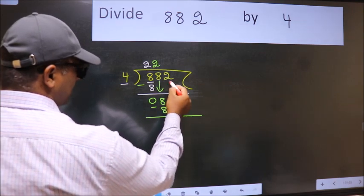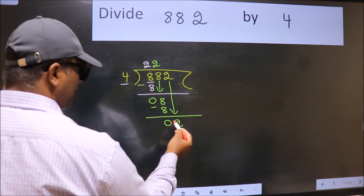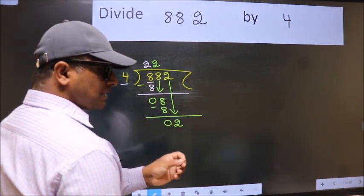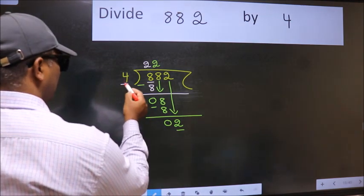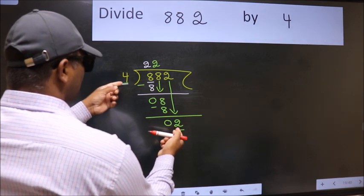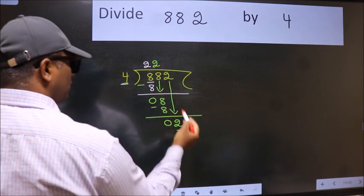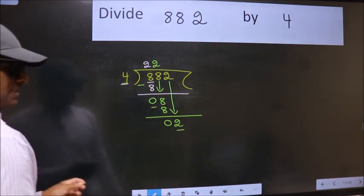After this, bring down the beside number. So 2 down. After this step, the mistake happens. And the mistake is this. Here we have 2 and here 4. 2 is smaller than 4.